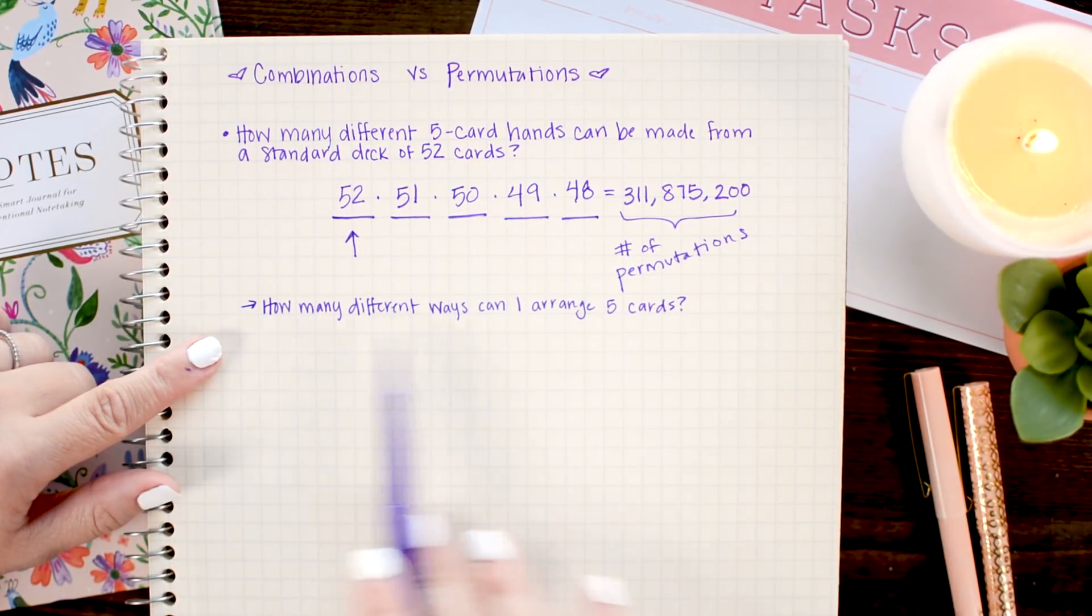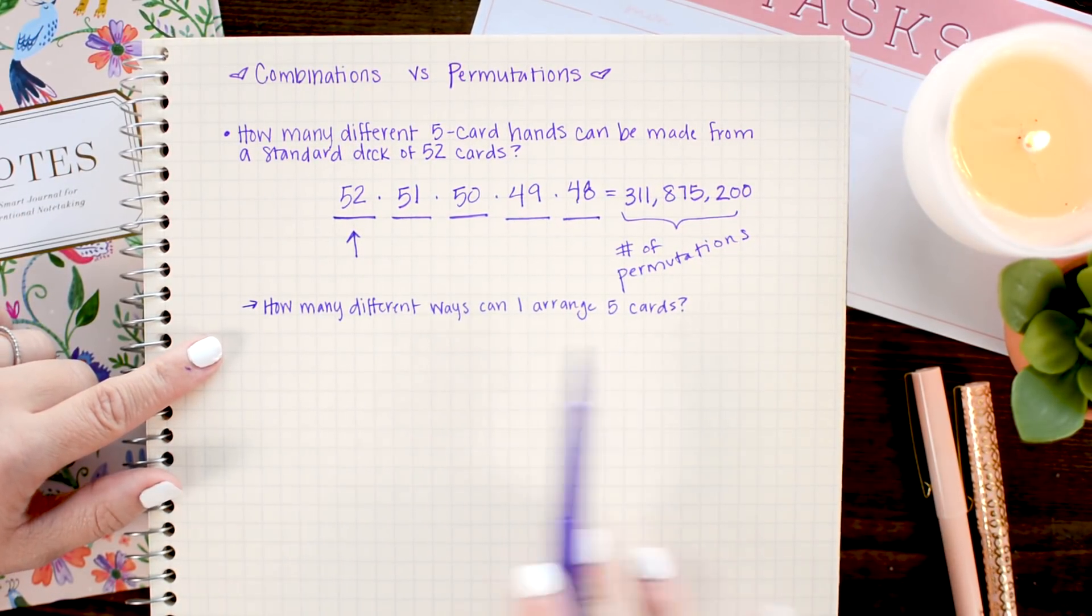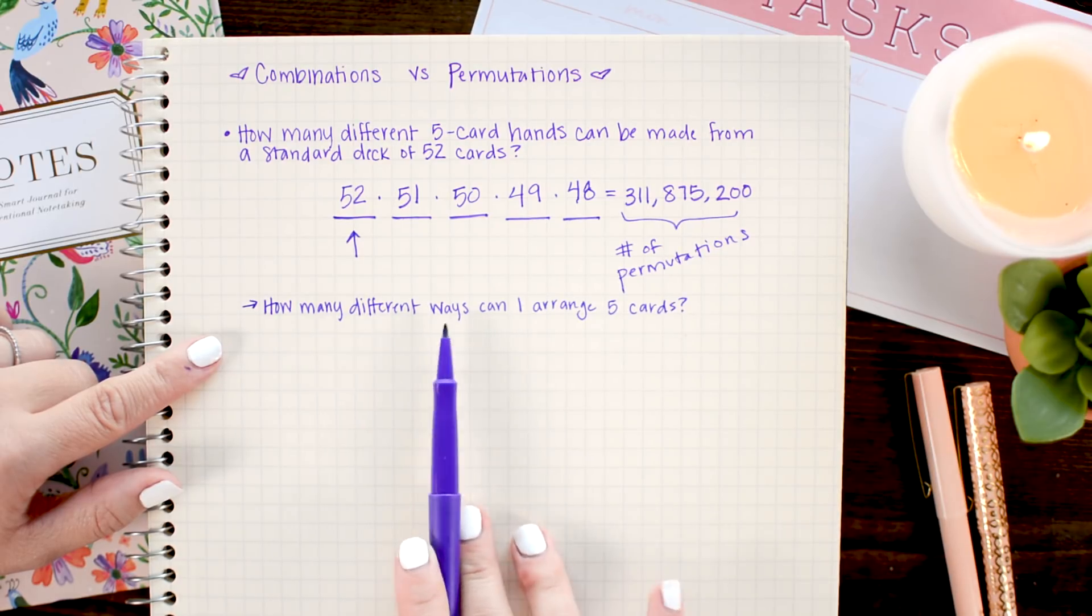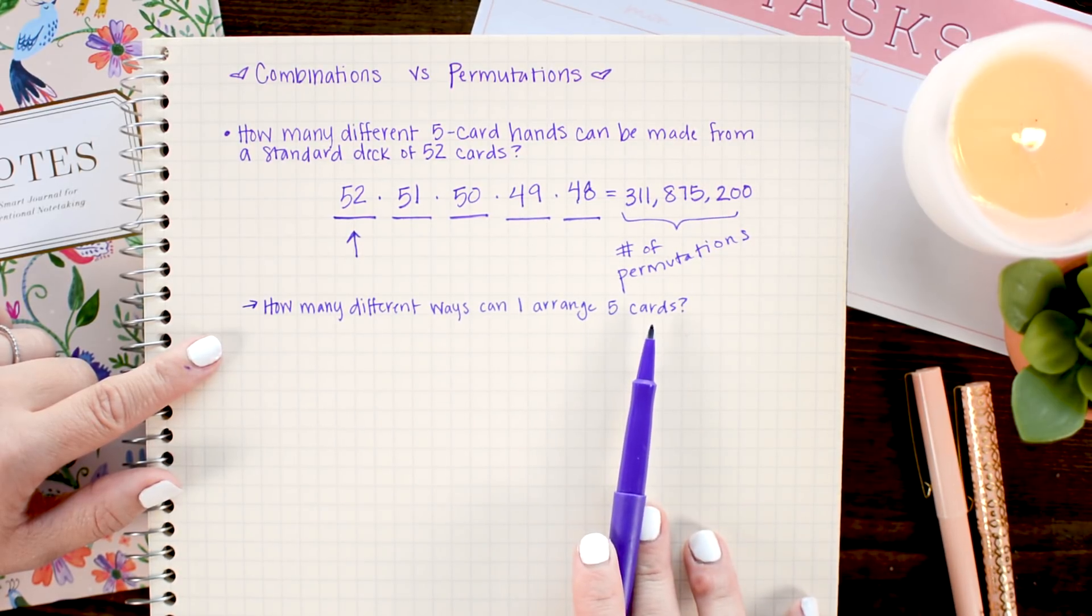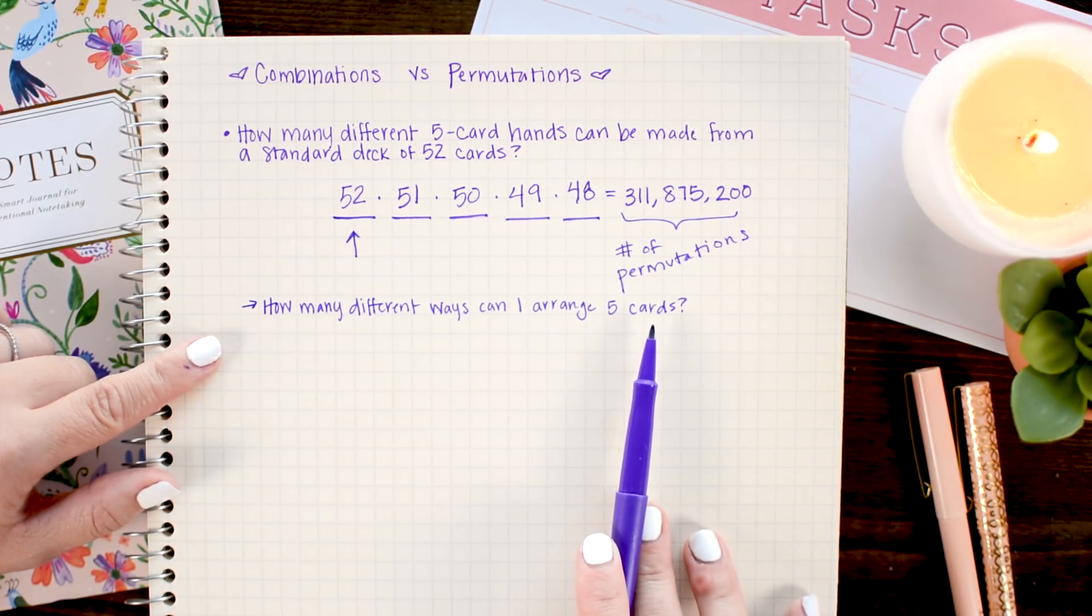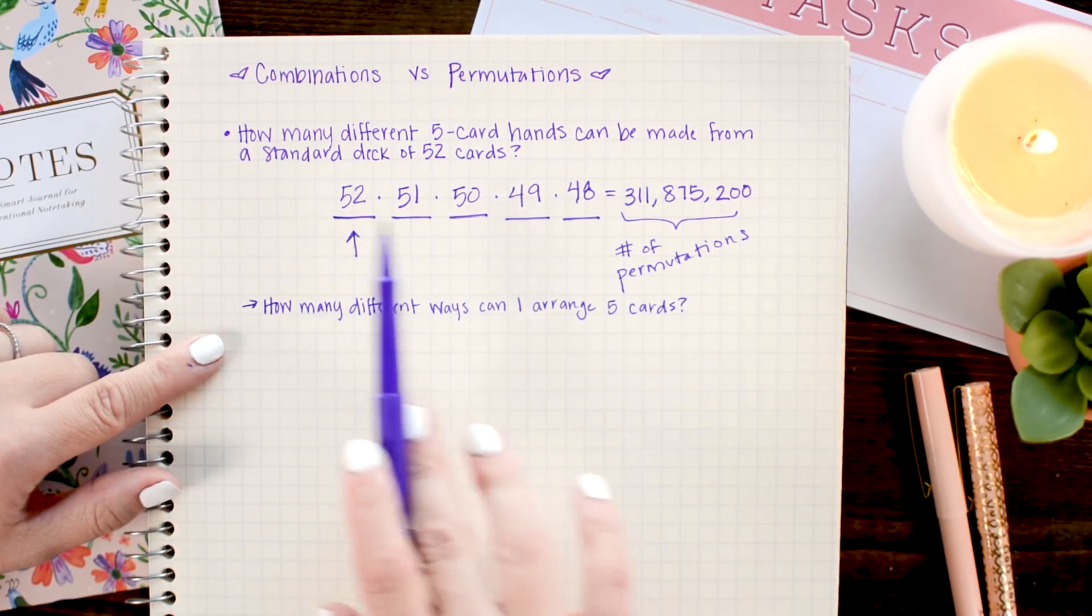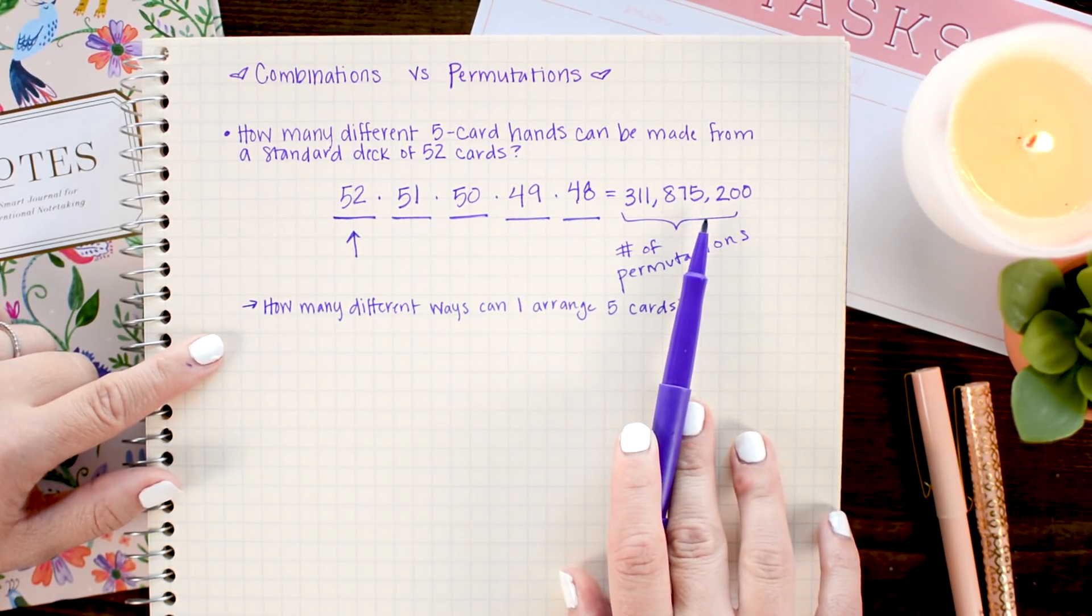This boils down to a sub problem here. Now, I want to figure out how many different ways I can arrange five cards. And once I find out how many ways I can do that, I can divide out all those repeat hands from this large number.